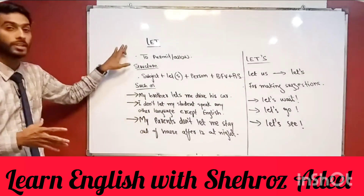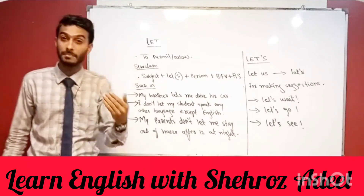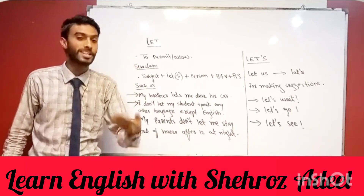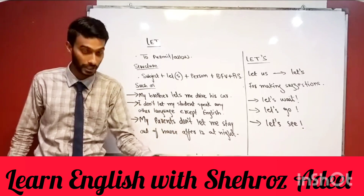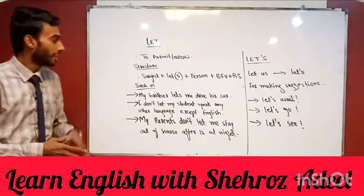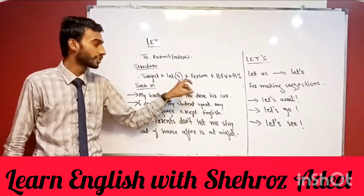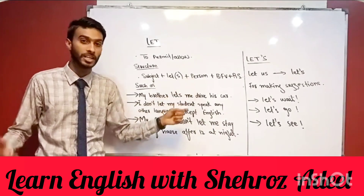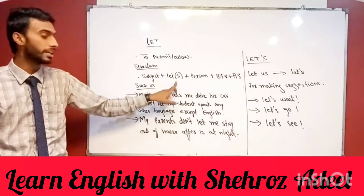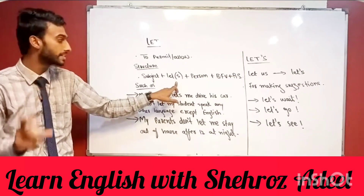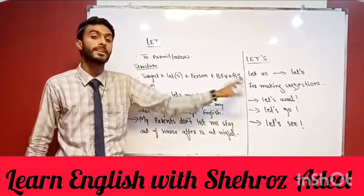Let's talk about 'let' today. We use 'let' as a causative verb when we are permitting somebody, or when somebody is permitting us, or when we are allowing somebody to do something. Its structure begins with subject, then 'let' — for third person singular we add 's' to get 'lets' — then person plus the base form of the verb, then the remaining elements.